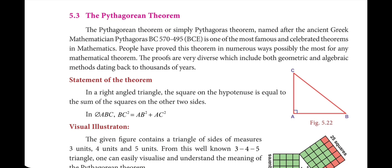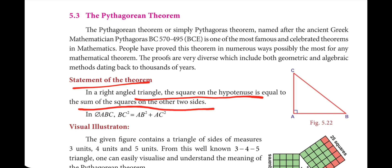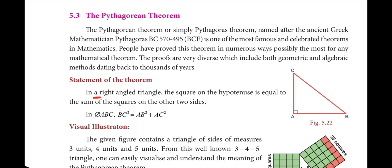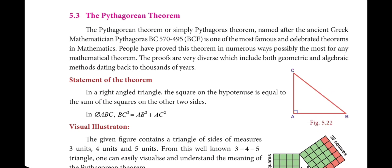Now the statement of the theorem: in a right-angled triangle, the square on the hypotenuse is equal to the sum of the squares on the other two sides. So in a right-angle triangle, the square of the hypotenuse side is equal to the sum of the squares of the other two sides.